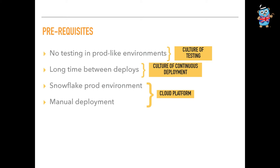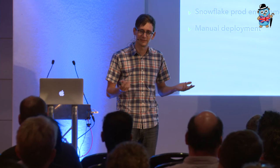If you have a long time between deploys, you have that drift — six months of drift from the last deployment is really dangerous. A culture of continuous deployment is a great way to mitigate risky deployments. For snowflake prod environments and manual deployment, a cloud platform is ideal — not required, but ideal. What I've seen before is teams just writing a bunch of Bash to deploy their stuff. It works, but it's not tested, not a great solution — someone leaves and suddenly no one knows what those scripts do.